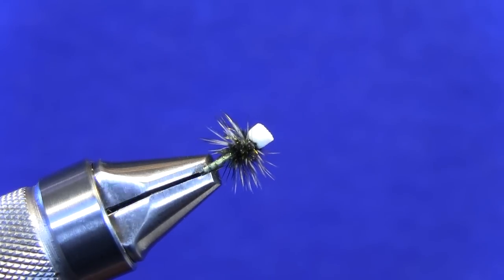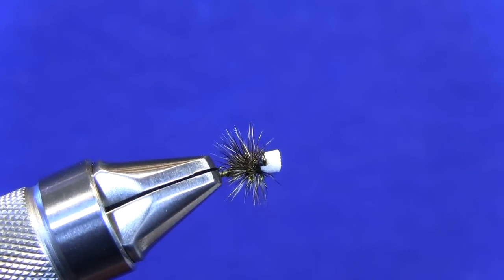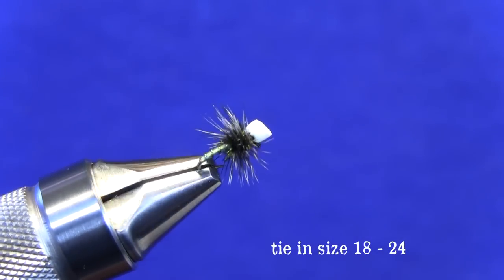Now we have our final product, the hanging midge. As we mentioned, this is a great pattern for the South Fork of the Boise, the Owyhee, the Big Wood, and pretty much any area stream that you fish throughout the winter months.